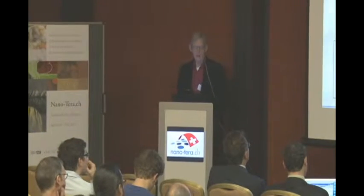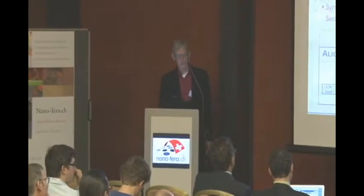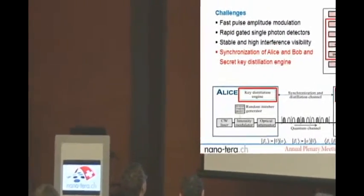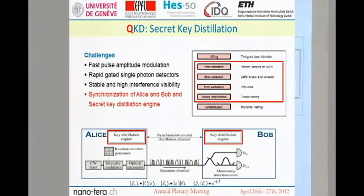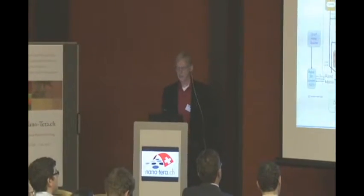These rapid gated single photon detectors show the best performance in the academic world. Now I show one example of the so-called key distillation engine. The photons that arrive here have to be matched with the photons that have been sent, so identified. Many photons disappear on this long fiber but those that arrive will be used for the secret key. The two systems, Alice and Bob, have to negotiate which of the sent bits of the key are to be used for this application. The processing is rather complex.